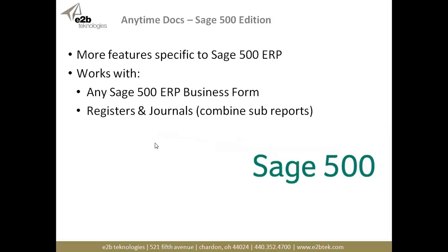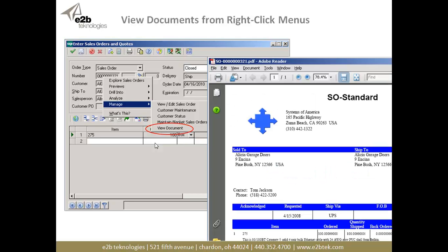That's all available for pretty much any general accounting or ERP application. We do have additional functionality that's specific to the Sage 500 platform, which allows you to use Anytime Docs with any Sage 500 ERP business form, as well as your registers and journals, where it will combine sub-reports into a single report — very useful for accounting purposes. Within the Sage 500 edition of Anytime Docs, you can view the documents that are created when you go to print the PDFs through a right-click context menu to view the document when you're on that document number.